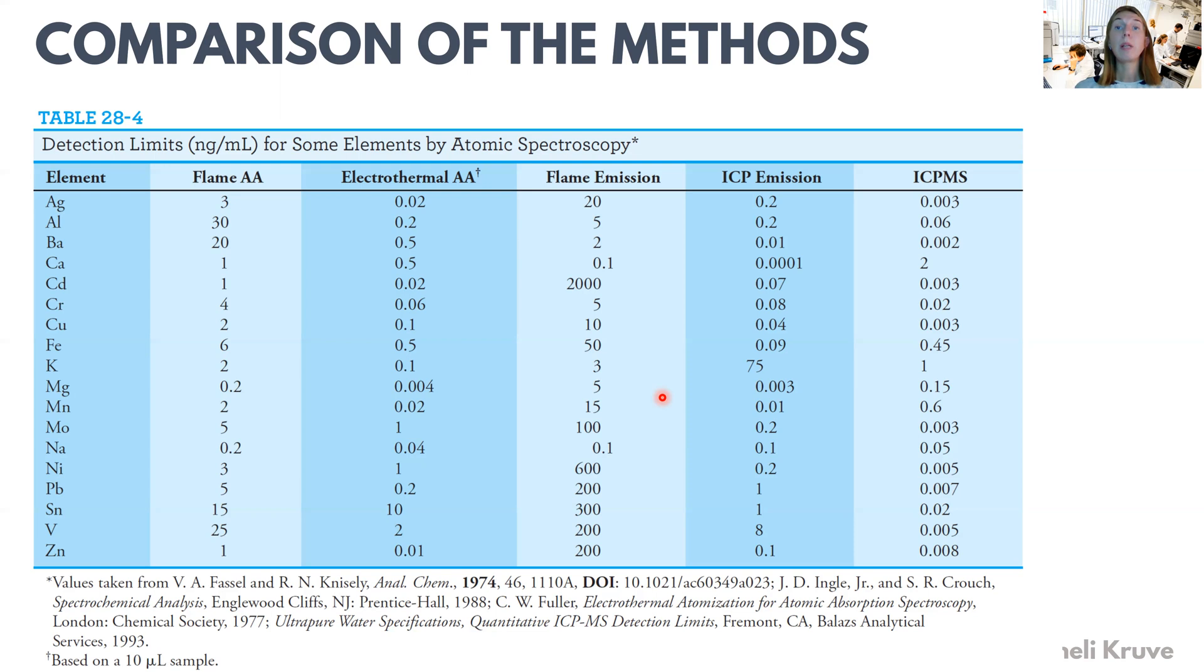But here we have a possibility to compare the detection limits that can be achieved with some of the atomic spectroscopy methods. So we have here a comparison of the atomic absorption with flame or atomic absorption with electrothermal, so graphite burners. And we also have flame emission and ICP emission, as well as ICP coupled to a mass spectrometer. And mass spectrometers you will have later in this course. So we are not going to dig very much deeper into the ICP-MS part here.